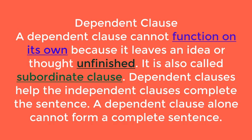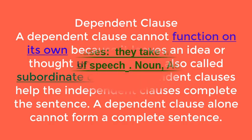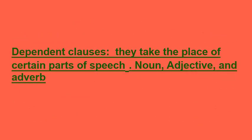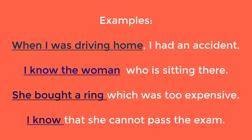A dependent clause alone cannot form a complete sentence. Dependent clauses take the place of certain parts of speech, like noun, adjective, and adverb. For example: 'When I was driving home, I had an accident.' The phrase 'when I was driving home' is a dependent clause — it leaves the thought unfinished on its own.